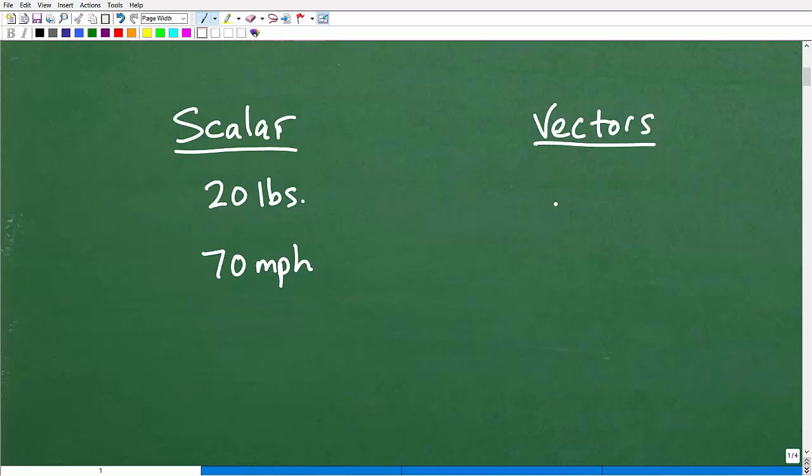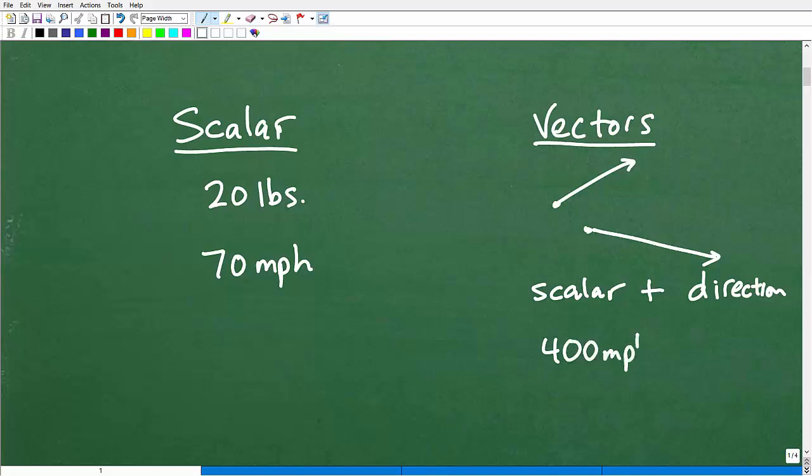What's the difference between that and a vector? Well, vectors we represent by little arrows. And vectors have a scalar component to them, something like this. But they have something else that makes them a vector, and that is direction. So vectors have both scalar and direction. They're directional, and they have a particular magnitude to them. So maybe something like this would be an example of a vector: 400 miles per hour at 070 degrees. This is our direction, and this right here is our magnitude or our scalar component. So vectors very specifically have direction and a magnitude.